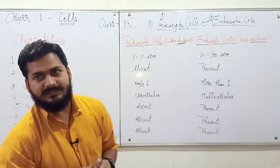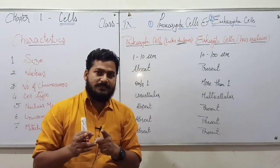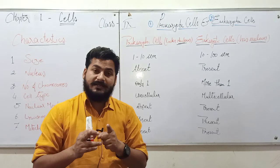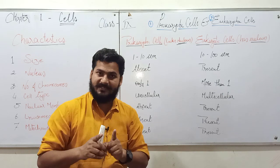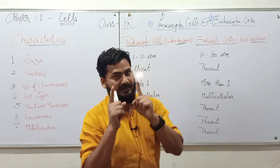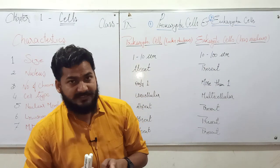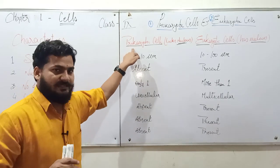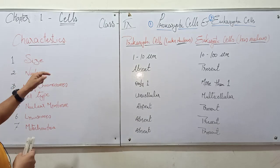So the differentiation is quite clear: if a well-defined nucleus is present in a cell, that is called a eukaryotic cell, and if a well-defined nucleus is not present in the cell, that is called a prokaryotic cell. Now let us talk about the first characteristic, which is size.